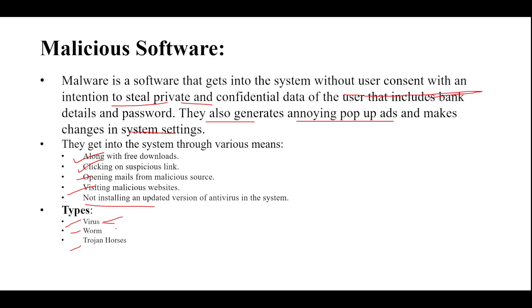The second type is the worm. A worm is a destructive program that fills a computer system with self-replicating information, clogging the system so that its operations slow down or stop. Major types of worms include email worms, instant messaging worms, internet worms, payloads, and worms with good intents.